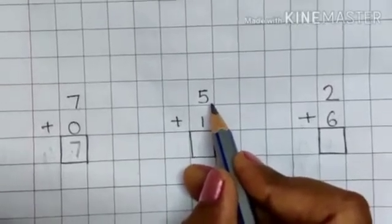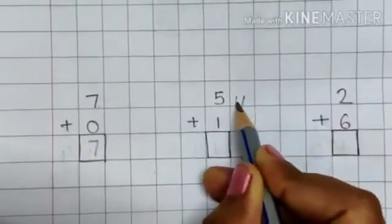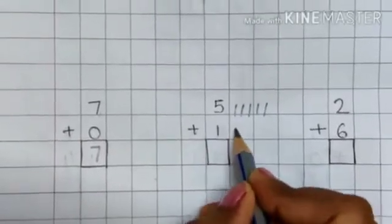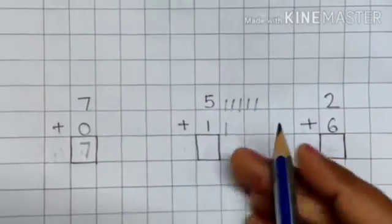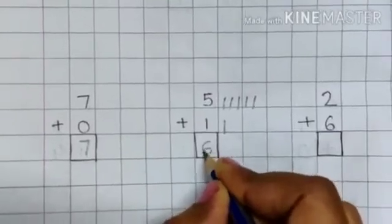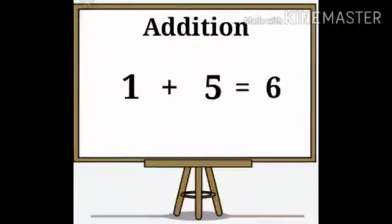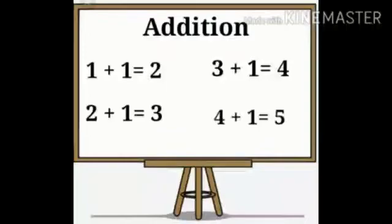Next, here we have number five. We will draw five lines for number five: one, two, three, four, five. And one line for number one. Counting all together: one, two, three, four, five, six. The answer is six. Whenever we add number one with any other number, it will increase to the next number in ascending order — like one plus one is two, two plus one is three, three plus one is four, four plus one is five, and so on.